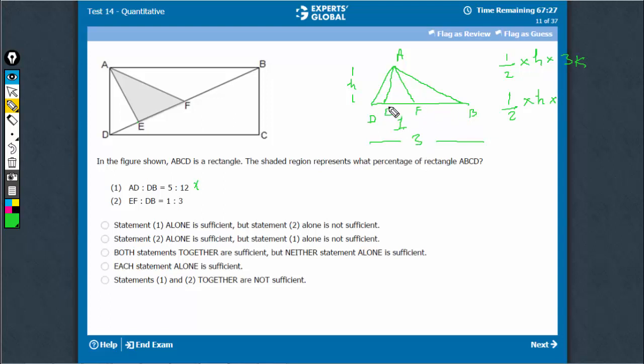If DB, the base is 3K, for EF, the base is K, right? And therefore, the ratio is 3 to 1. H would get cancelled, half would get cancelled, Ks would get cancelled. The ratio would turn out to be 3 upon 1.